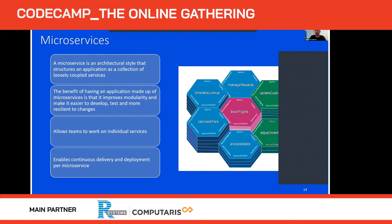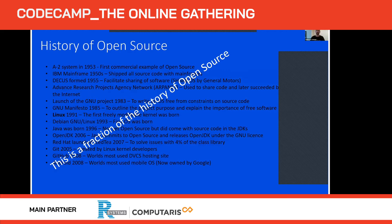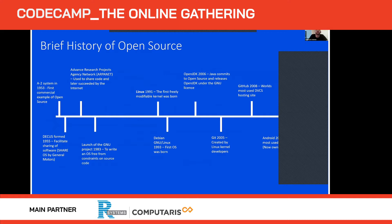A bit of history about open source. First, the A2 system: a company shipped their product with source code and a feedback sheet, asking customers to review the code and mail back recommendations — essentially the first occurrence of open source. Then we have Linux and Debian, the first open source operating systems — a big move forward. Then OpenJDK, giving Java to the open source community. In recent history, one of the biggest things bolstering the open source community is GitHub — having a platform where everyone can put source code, create issues, and submit pull requests.